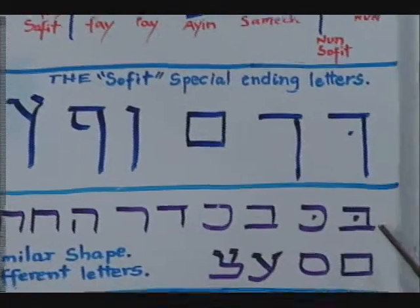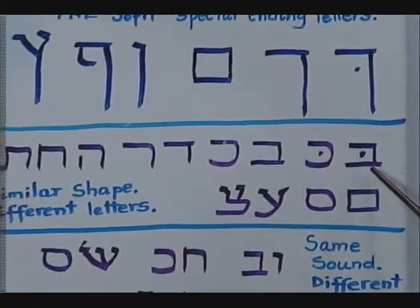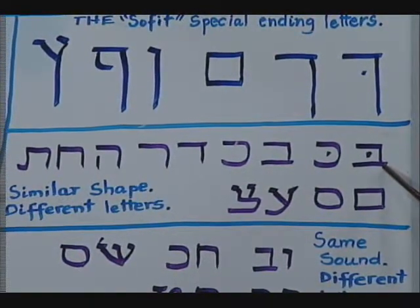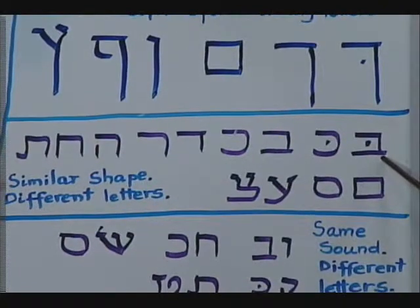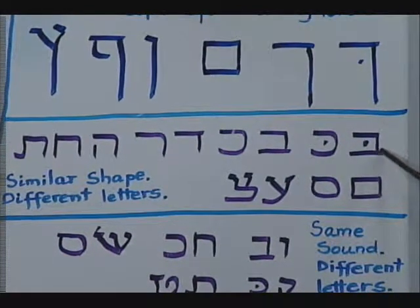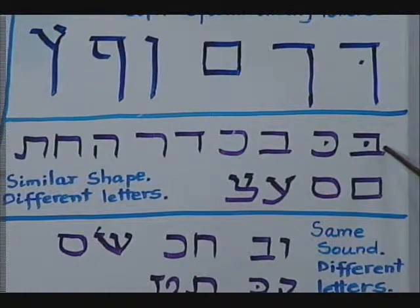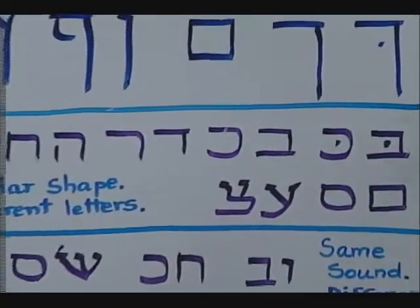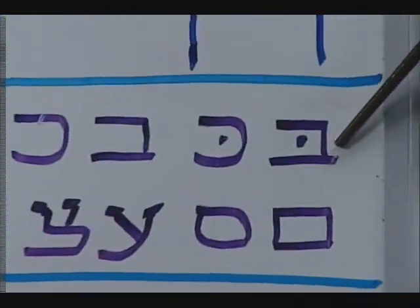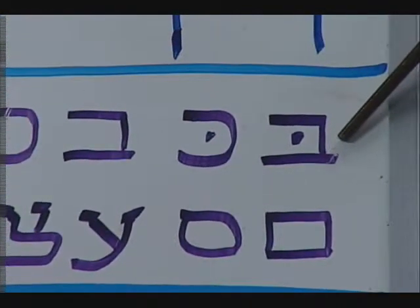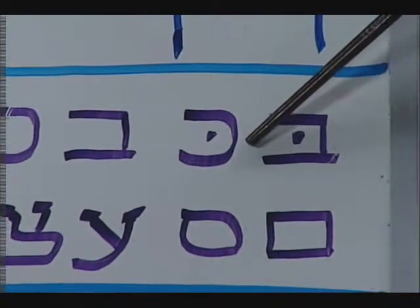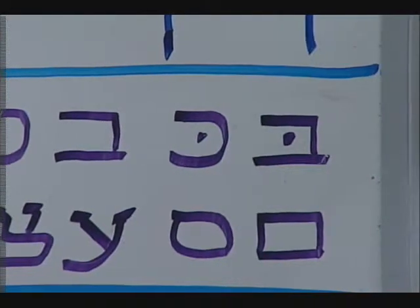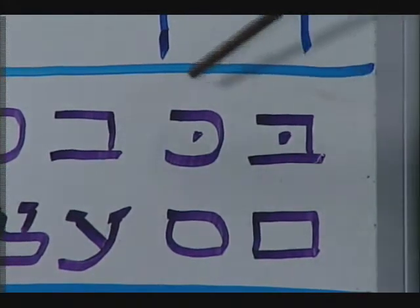Let's go down to the next panel. There are some letters that appear to be similar in form. For example, I'm pointing to a bet, and right next to it is a kaf. We might have to zoom in here to see the difference. The difference is this little squared section here in the corner, whereas the kaf is rounded over here. So that takes some training to differentiate between these two forms.